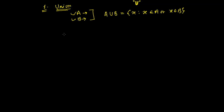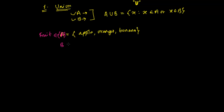Let me give you an example. Suppose we have a set of fruits F, where the elements are apple, orange, and banana. And now I also have a vegetables set represented by V. In vegetables, let's say I have cauliflower, cabbage, and ladyfinger.